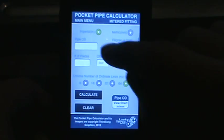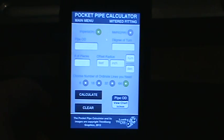Let's scroll down. As you can see you need to enter the pipe OD, the degree of turn. You can do a 90 degree fitting, 75, 45, whatever degree you want and you can still make it out of mitered fittings. The number of pieces and then the offset radius.